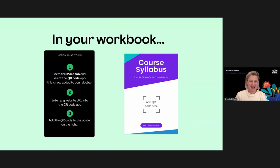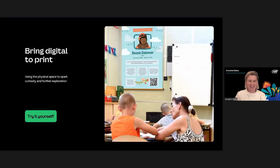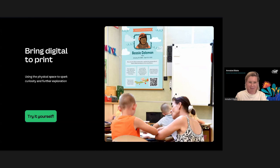In your workbook there's a little exercise outlining a few quick steps to get started using QR codes in Canva. You might start by turning every poster in your classroom into an Easter egg hunt with links to interesting educational content through QR codes, which you can quickly and easily create in Canva. In your workbook you can add a QR code to an imaginary poster and start to get an idea of how you can add QR codes to any printed materials and have them link out to digital experiences.